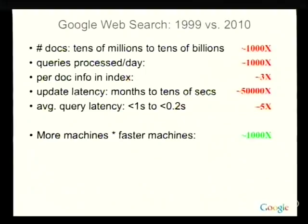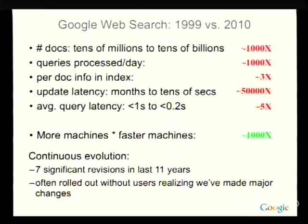Another important factor for users is how quickly you get responses — measured at the server side, we've had about a 5x improvement. The difficulty in engineering a retrieval system is the product of all these factors: larger indices, more queries, more information per document, more frequent updates, and faster responses. More machines and faster machines since 1999 have given us about a thousand-fold improvement in computational capability. Over the last 11 years we've rolled out about seven very significant revisions to how our search system works, often without users realizing we've made major fundamental changes underneath.